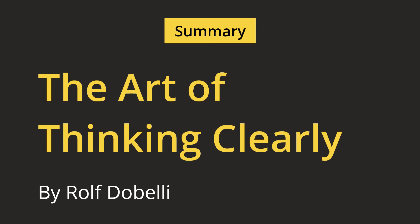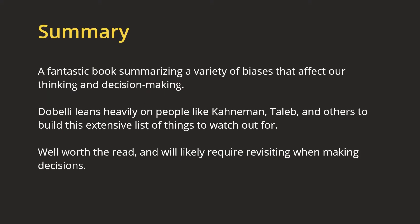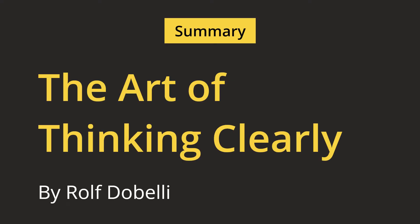Summary of the Art of Thinking Clearly by Rolf Dobelli. A fantastic book summarizing a variety of biases that affect our thinking and decision-making. Dobelli leans heavily on people like Kahneman, Taleb, and others to build this extensive list of things to watch out for. Well worth the read, and will likely require revisiting when making decisions. These are just short summaries of the biases. To know more, go to mycognitivebiases.com or get the paperback or a free audiobook from the link in the description. The video has been split into two parts with approximately 50 biases in each part. Let's begin.